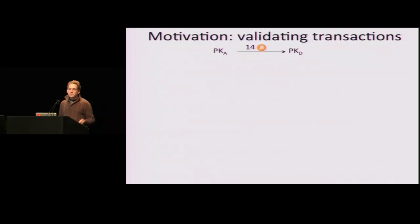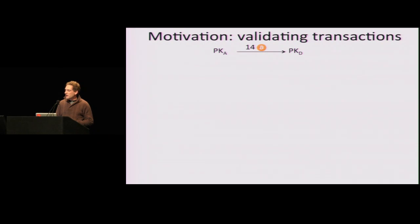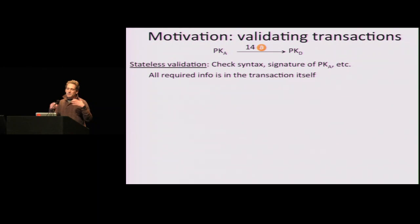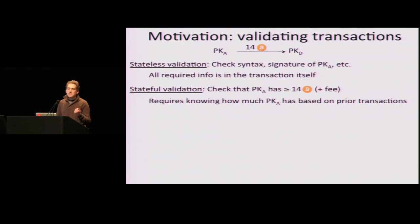You've got Alice who wants to pay 14 bitcoins to David, and she writes a transaction about that, and you want to validate the transaction. Part of the validation is stateless — you look at the transaction and check the syntax, the fields have been filled in, and there's a digital signature of Alice's public key. All of that you can validate just by looking at the transaction.